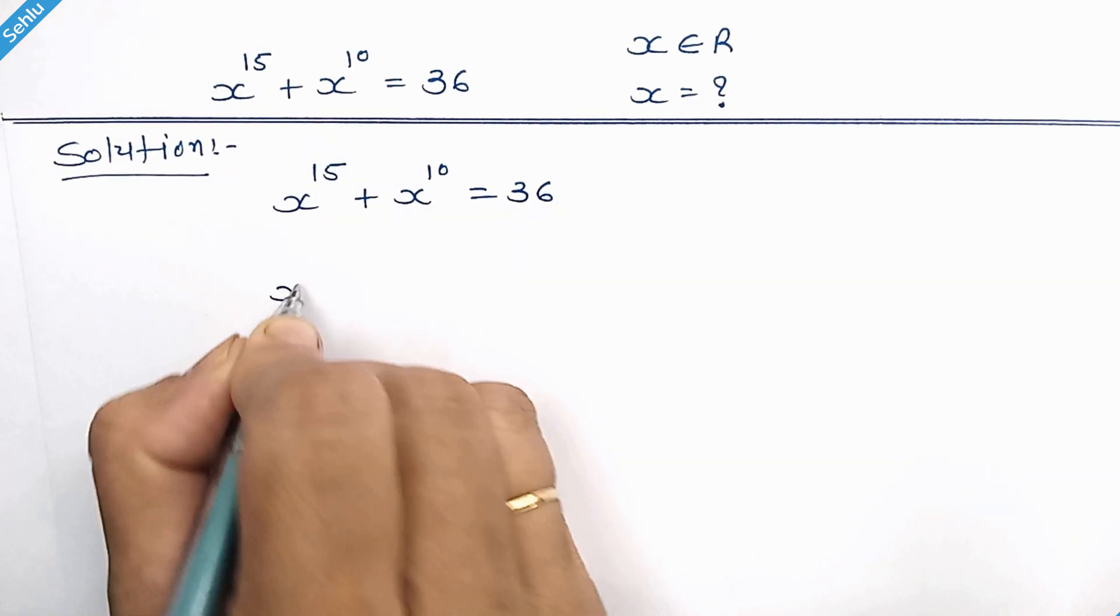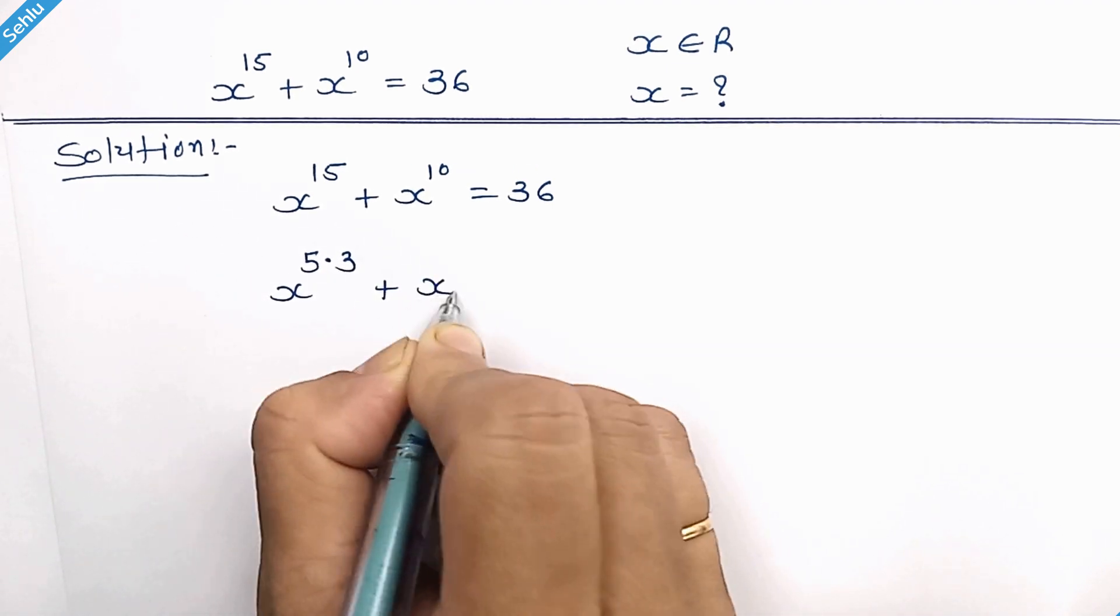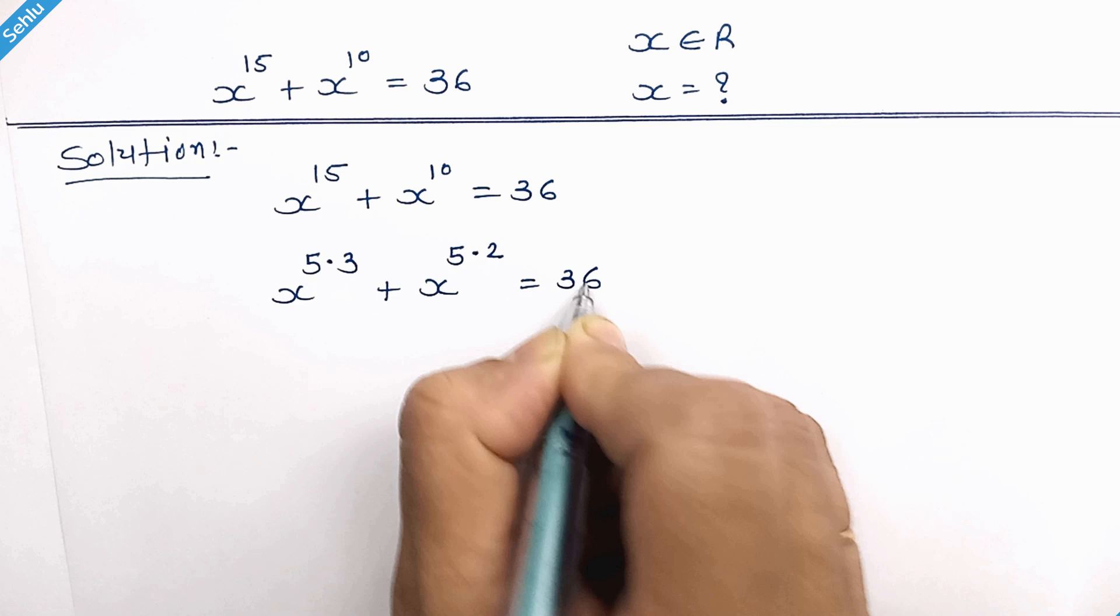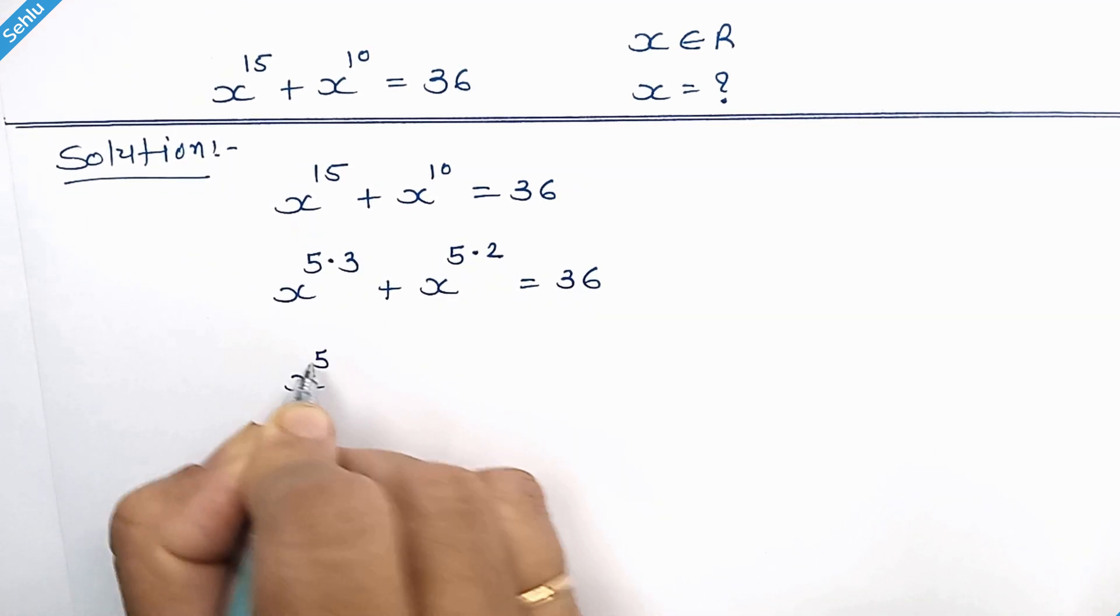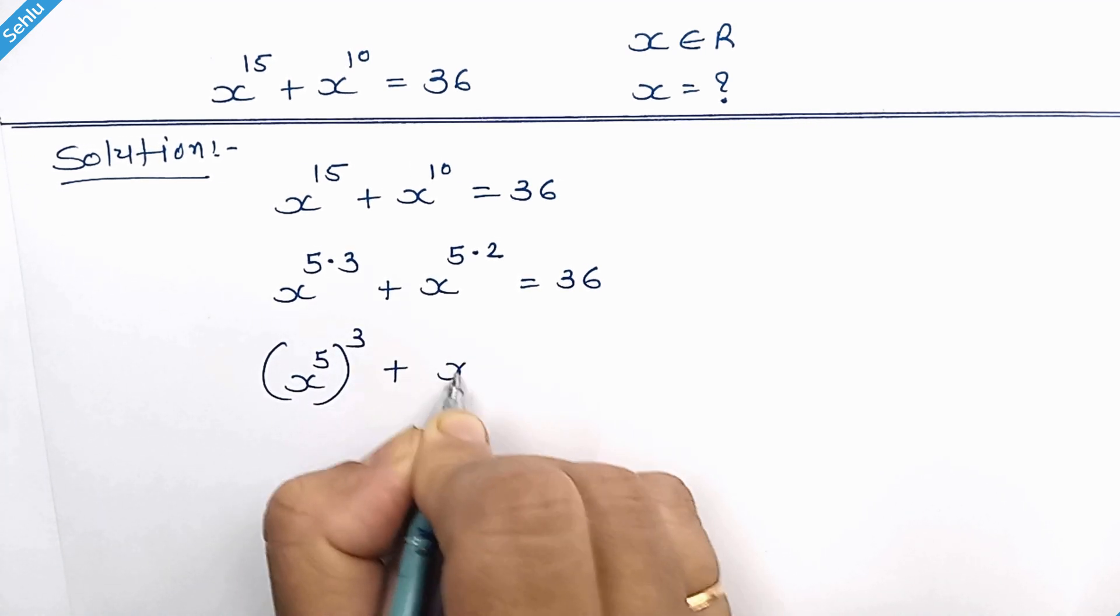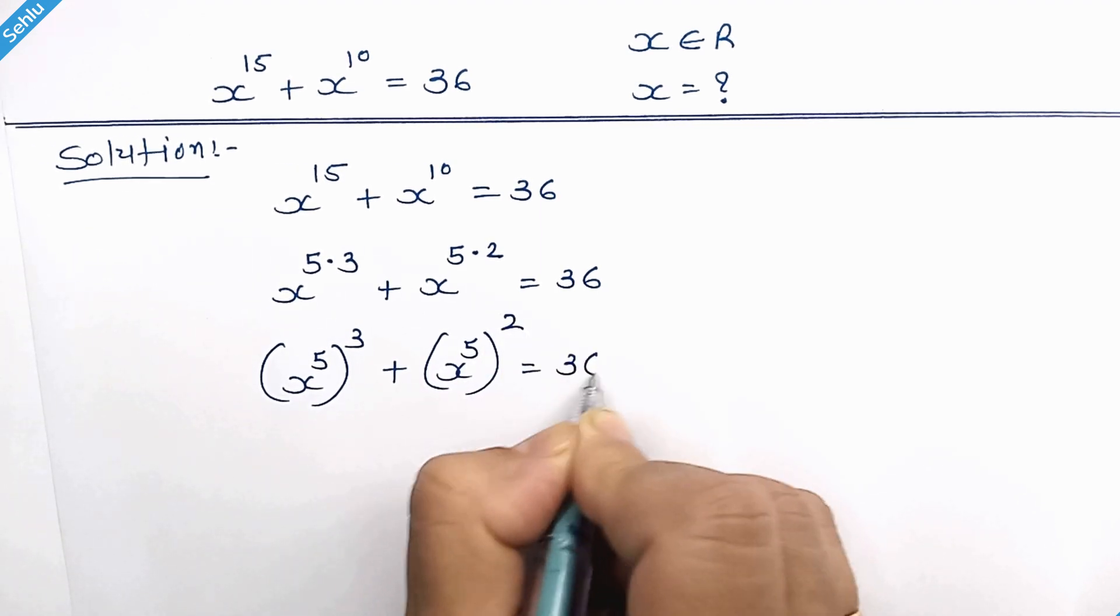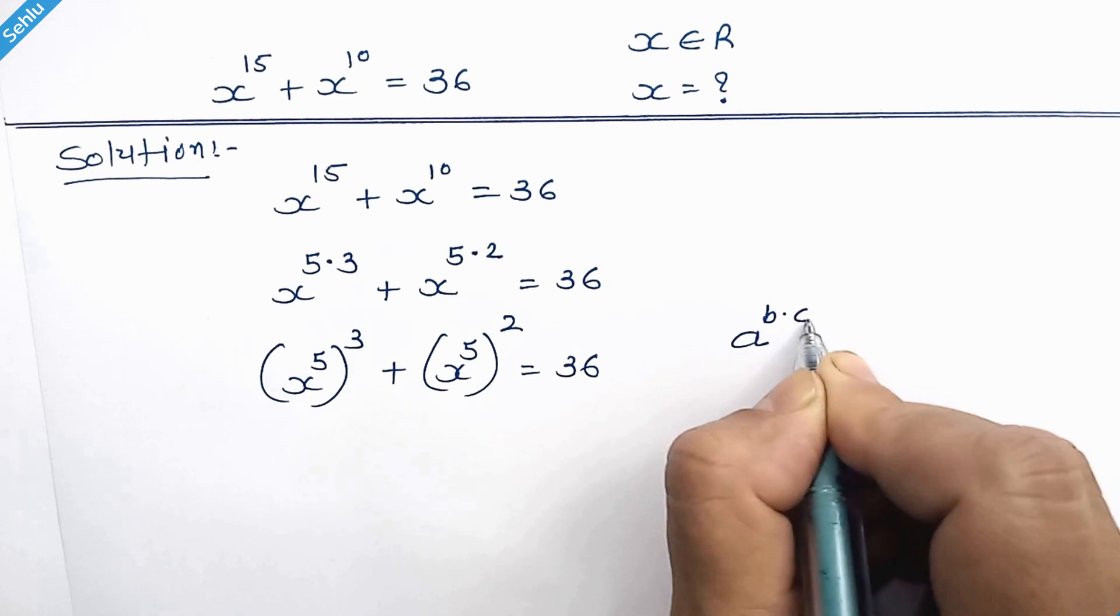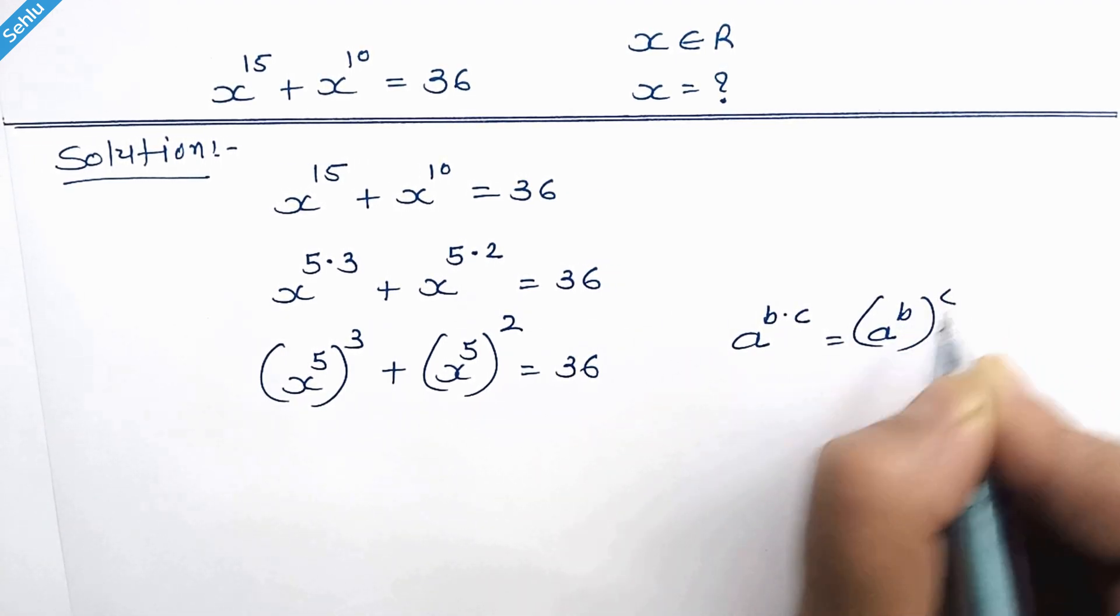It can be written as x to the power 5 times 3 and x to the power 5 times 2. Now it can be written as x to the power 5 whole cube plus x to the power 5 whole square. We can write this because when we have a to the power b times c, then it can be a to the power b whole to the power c.